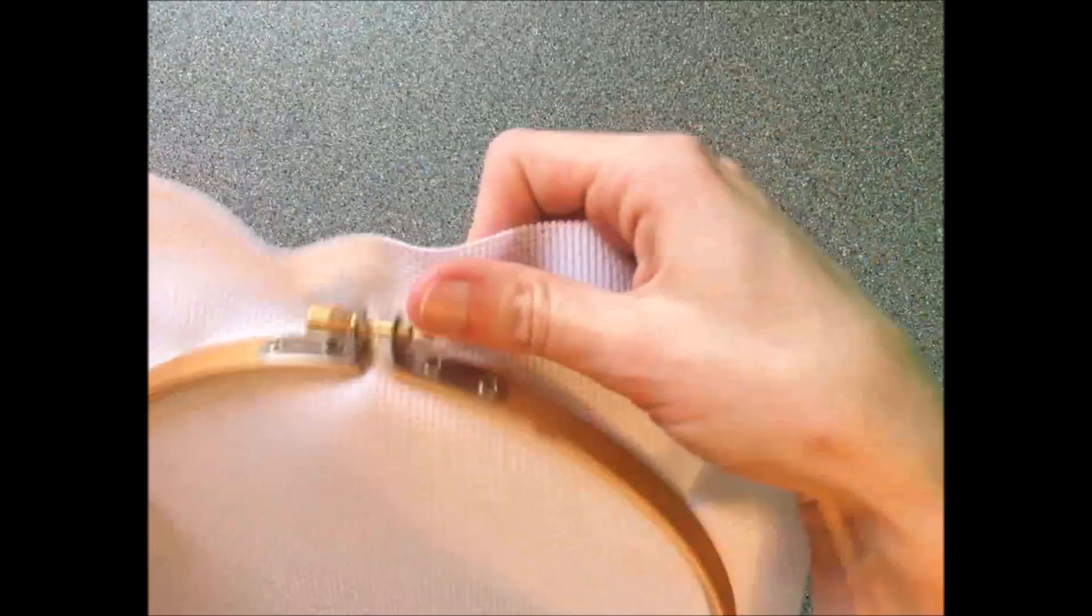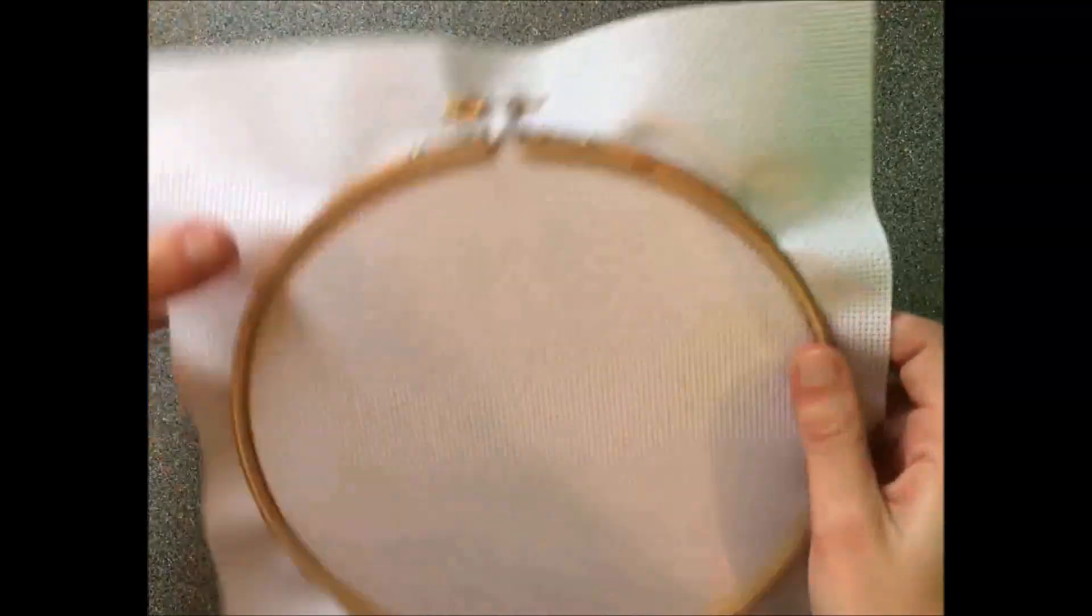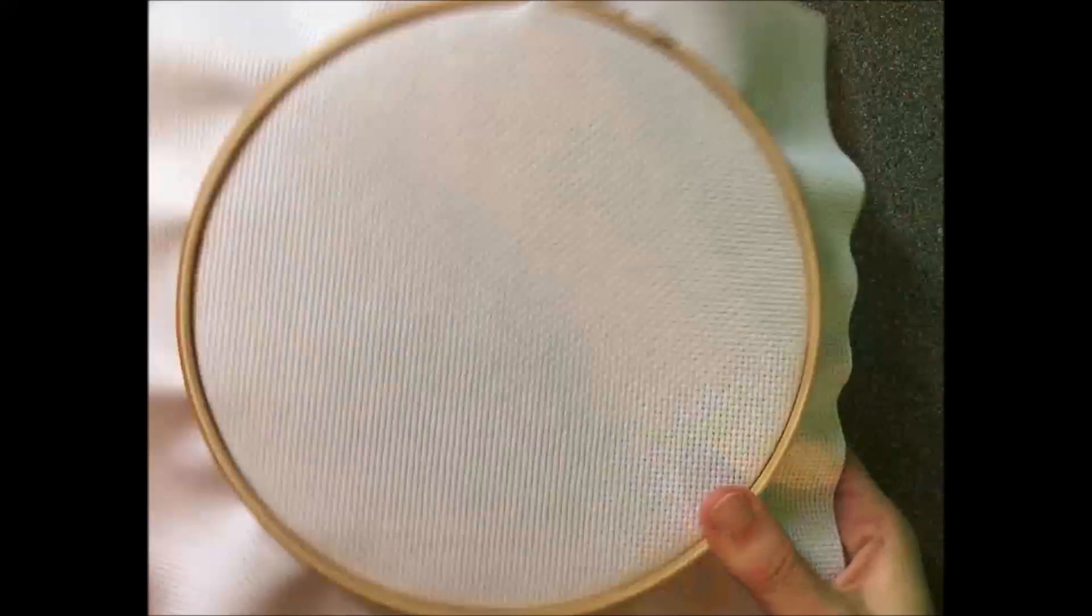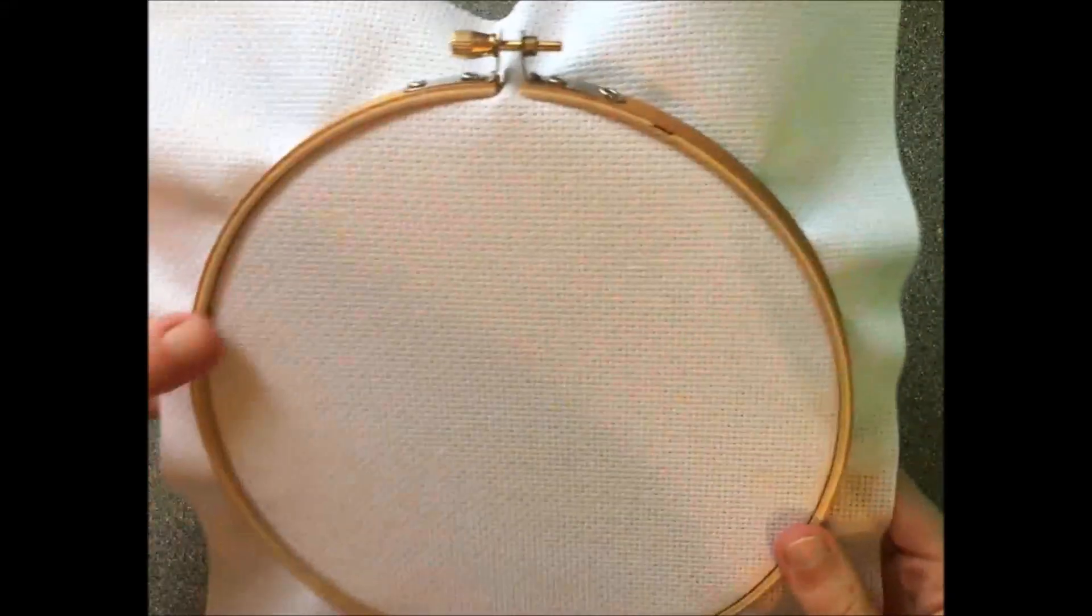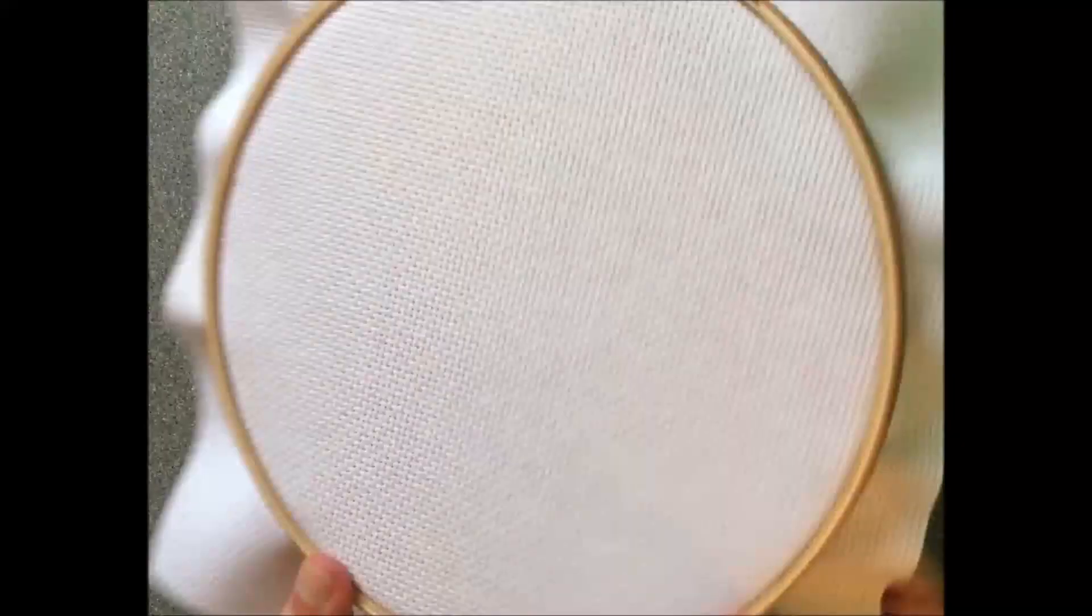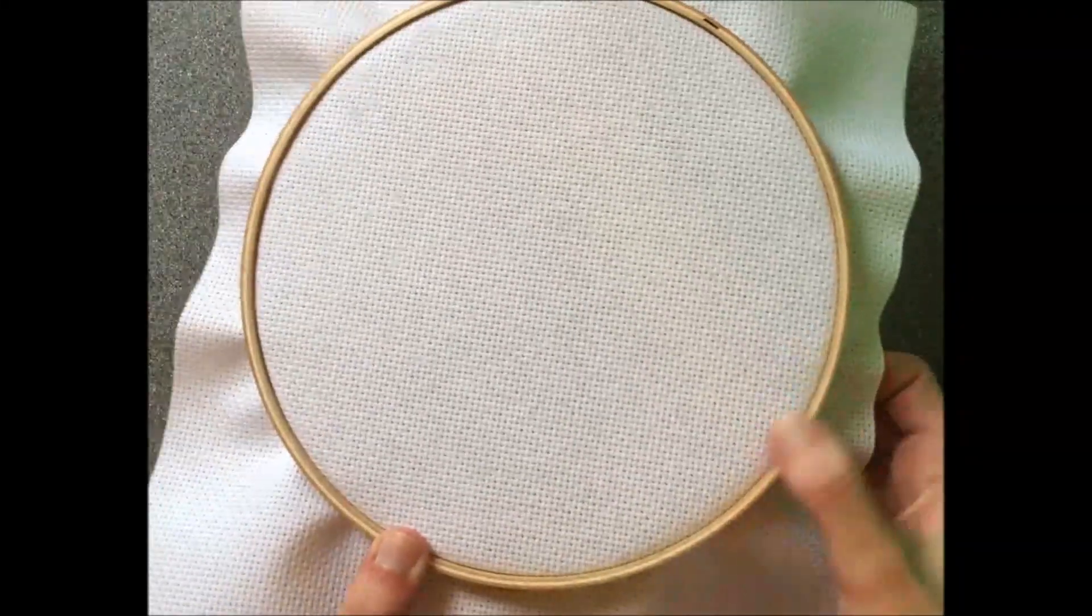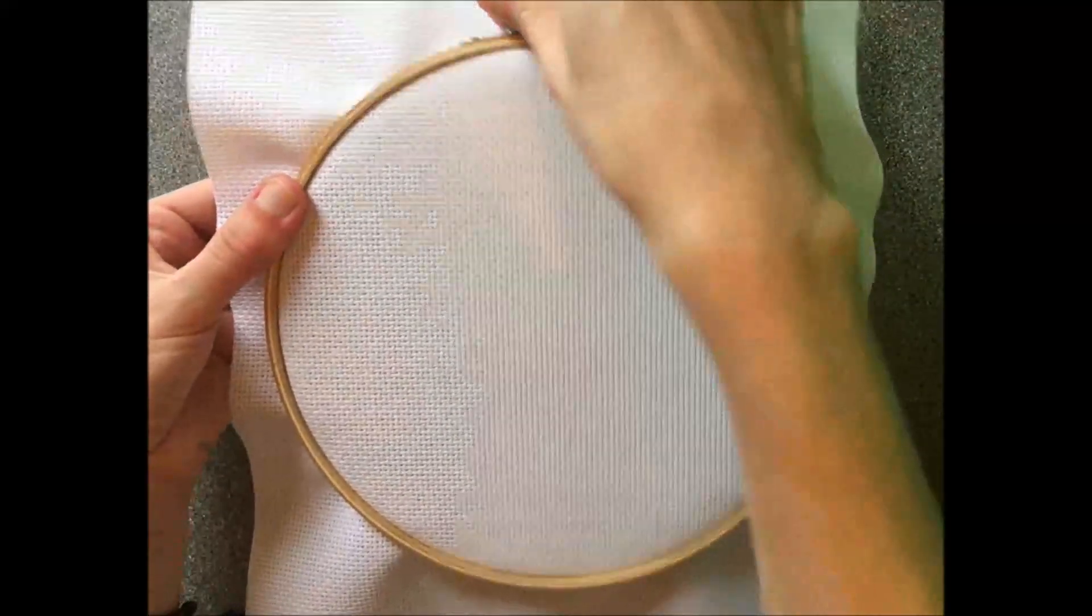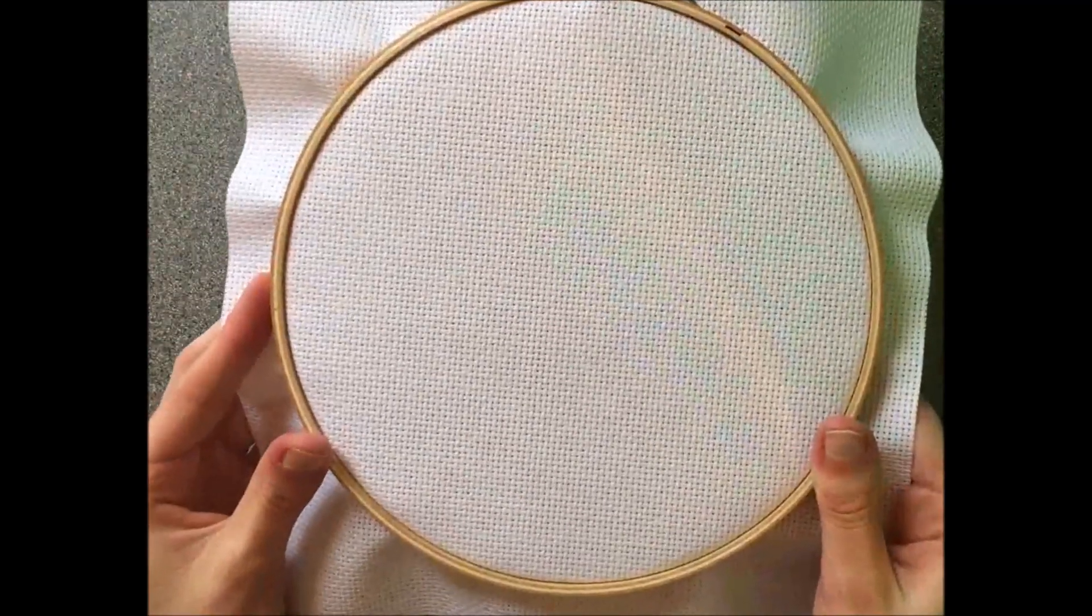I'm going to pick it up, straighten out the cloth, and just continue tightening it and adjusting the hoop until the inner and outer hoop are lined up evenly. And you want this to be pretty tight. It doesn't have to be overly tight, but tight enough that your cloth isn't going to move while you're cross stitching.